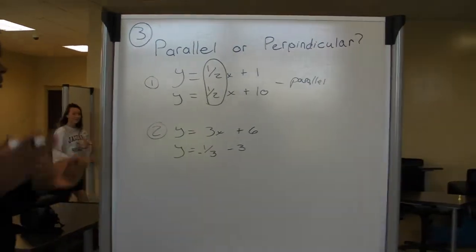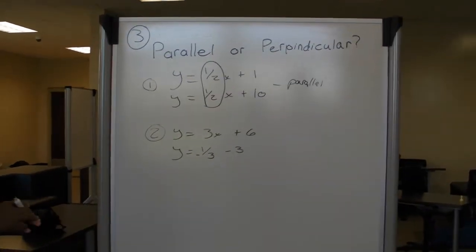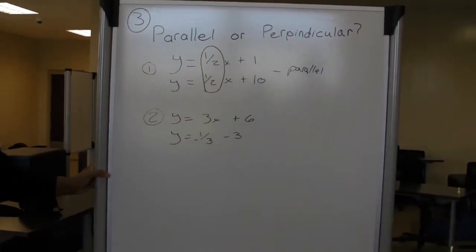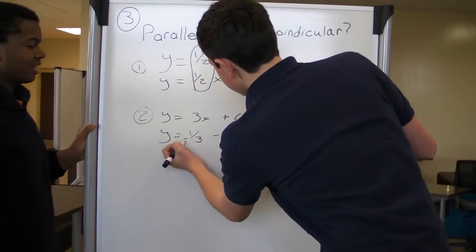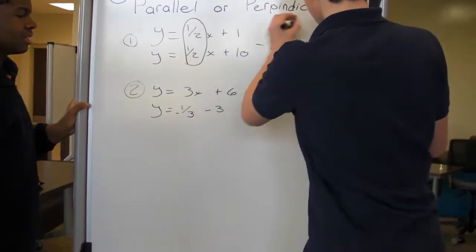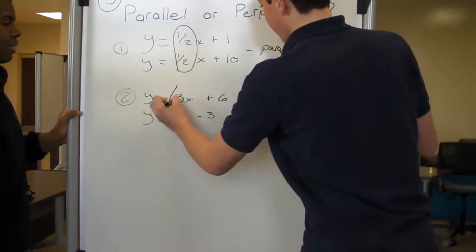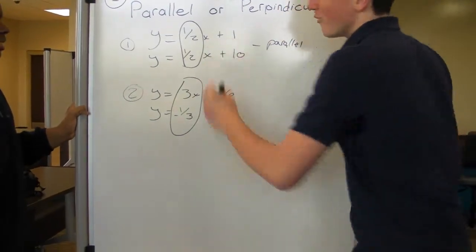I can't remember perpendicular, though. Could you explain it to me? Isn't it the opposite reciprocal? So because this is three x, and this is negative one-third, wouldn't they be perpendicular? John, you're a genius. We did it!